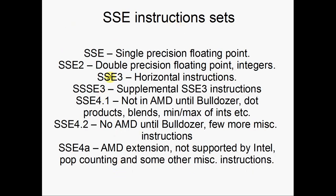Here are all seven of the SSE instruction sets and what they added. The initial one, SSE, provided single precision floating point instructions. SSE2 added double precision floating point instructions and integers. It's most important that your CPU supports both SSE1 and SSE2 — if it can do both, you can get really good speed-ups. Otherwise you'll be pretty limited unless you're doing single precision floating point.